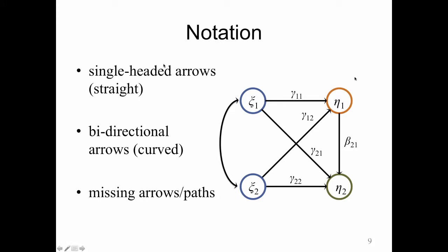Let's look at eta2. So eta2, I can move along eta2, I can move backwards along gamma21 to psi1. I can cross the path to psi2, and I can only move forward. So I'm moving forward along gamma 1,2, and forward along beta21.